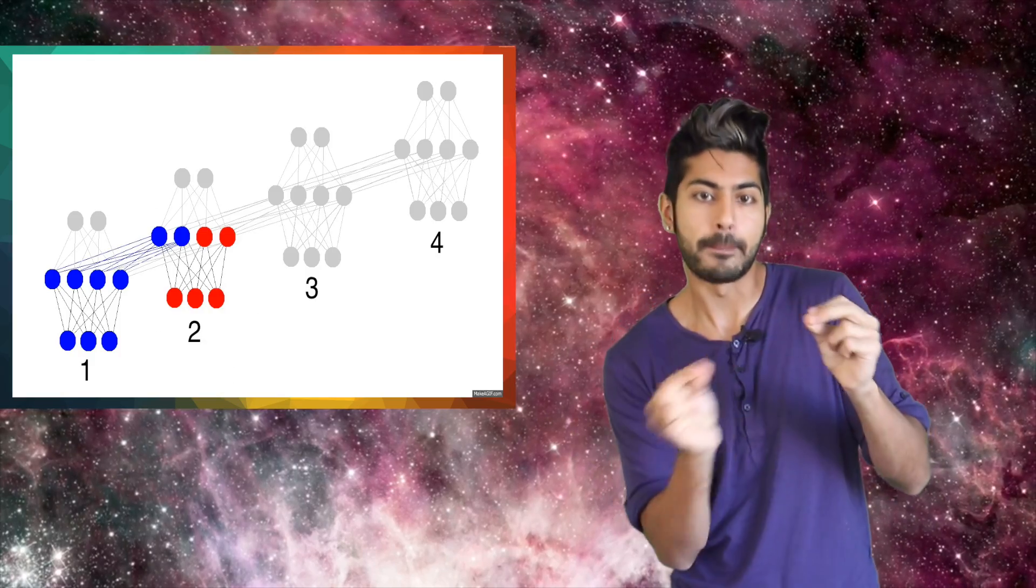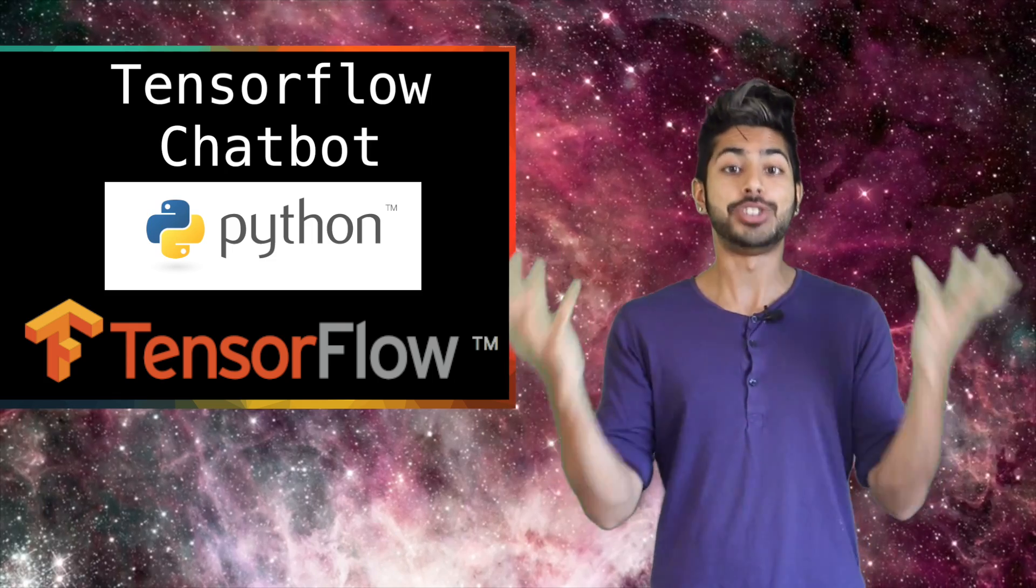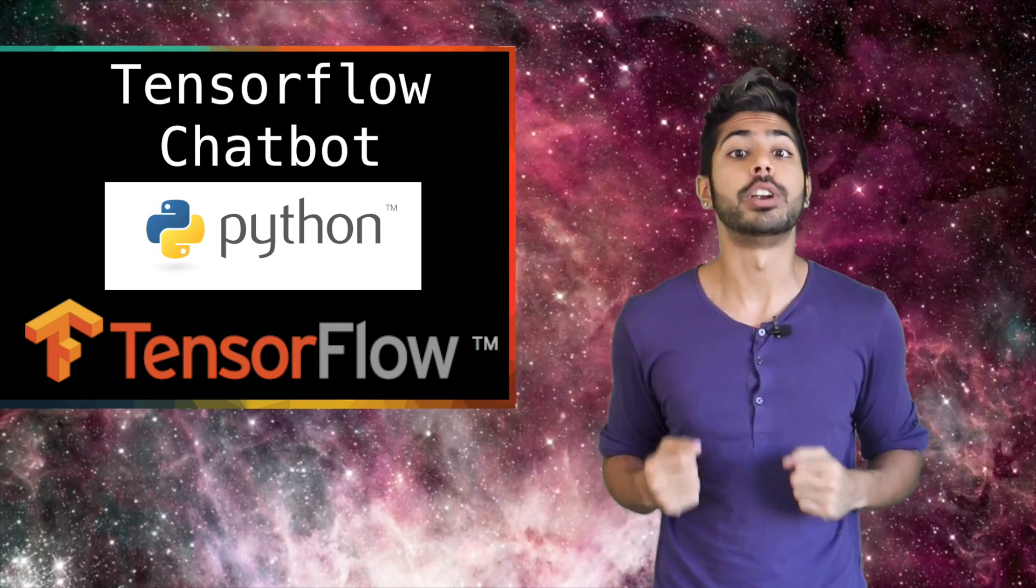We need a network that can accept sequences as an input. A recurrent neural net. In a recurrent net we feed the data back into the input while training it in a recurring loop. So we're gonna build a chatbot in TensorFlow using recurrent neural nets.